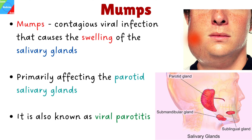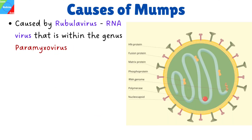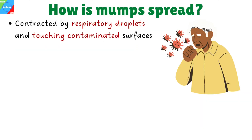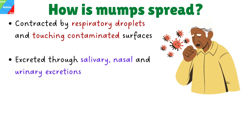What causes mumps? Mumps is caused by rubulavirus, which is an RNA virus within the genus Paramyxovirus and a member of the family Paramyxoviridae. It is also called the mumps virus. The virus is contracted by respiratory droplets and touching contaminated surfaces, and is excreted through salivary, nasal, and urinary excretions.